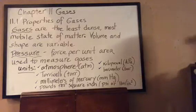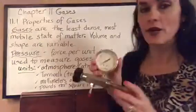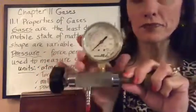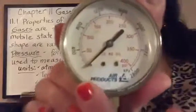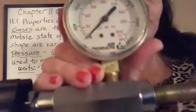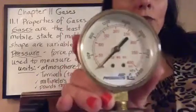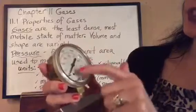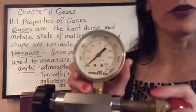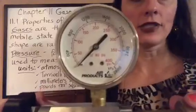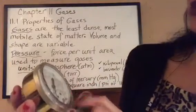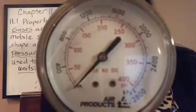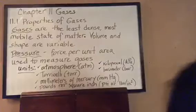Let me show you some other gauges used to measure pressure. This here is a gauge that would go onto a gas cylinder. You can see it's at zero because it's not hooked up to anything applying pressure to it, but if this were hooked up to, say, a helium cylinder, the dial would move accordingly with the pressure applied. This gauge has pressure units in both pounds per square inch and kilopascals.